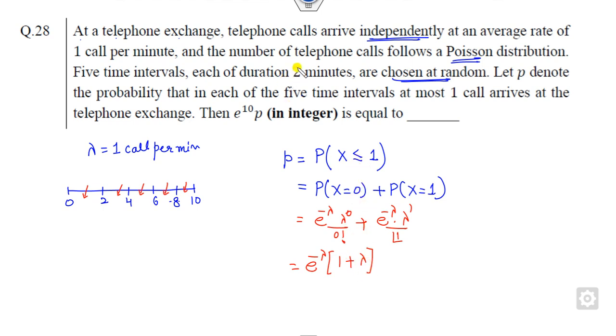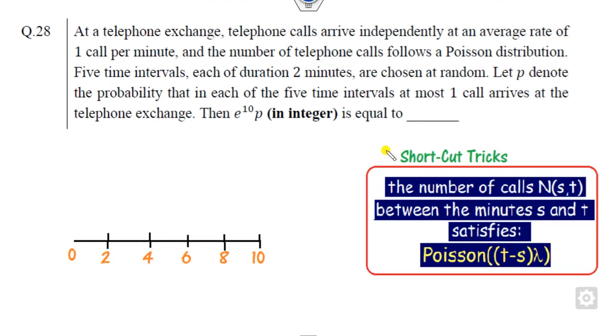Now what is lambda there? Because it consists of two minute duration also. So what I can do is find the probability corresponding to these intervals. Since all are independent, I can find the number of calls between zero to two for these intervals and find the probabilities.